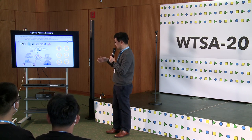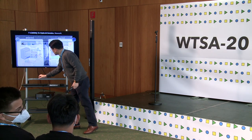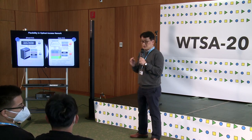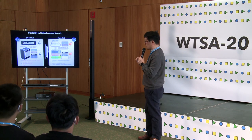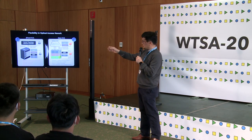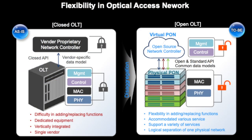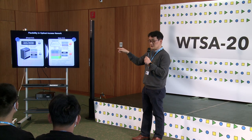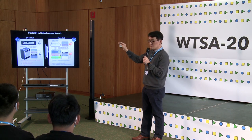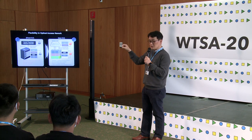Key requirements include high bandwidth, low latency, and flexibility. One method to provide flexibility in communication networks is disaggregation. Current network equipment — seen on the left-hand side — is shelf-type and is very difficult to add new services to, because the software and hardware are in one box. So we split the hardware part — MAC and PHY — and the management and control part. The hardware part is called the physical access network, and the software part is the virtual network, where we can add or replace many functions.